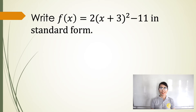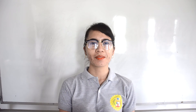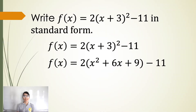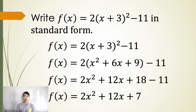Let's try this example. Write f of x is equal to 2 times the quantity x plus 3 squared minus 11 in standard form. So first, expand the square of the binomial. So we have f of x is equal to 2 times x squared plus 6x plus 9 minus 11.